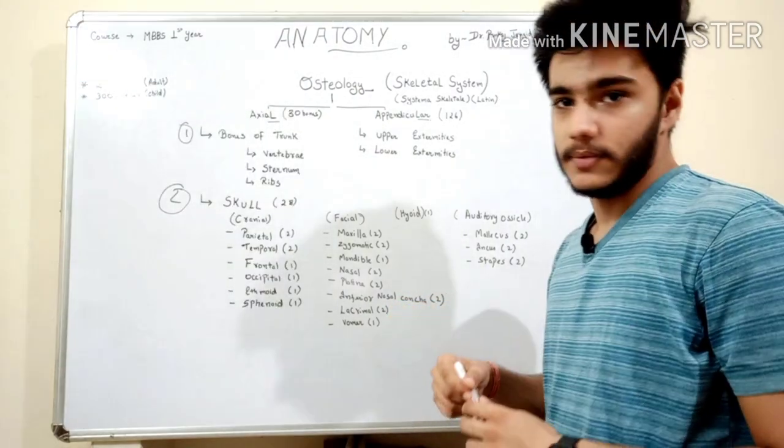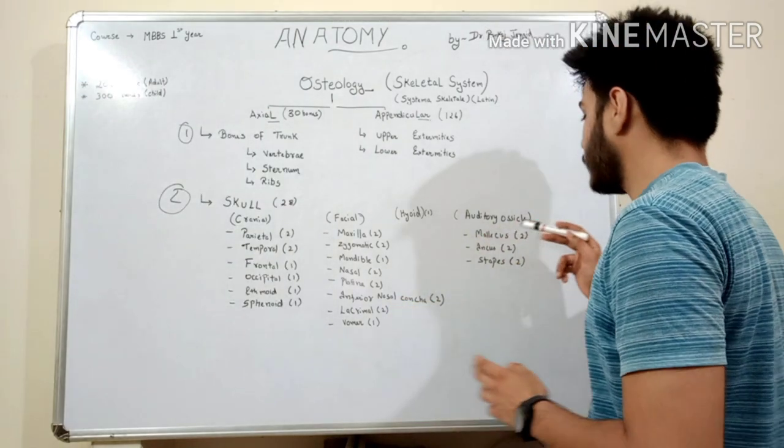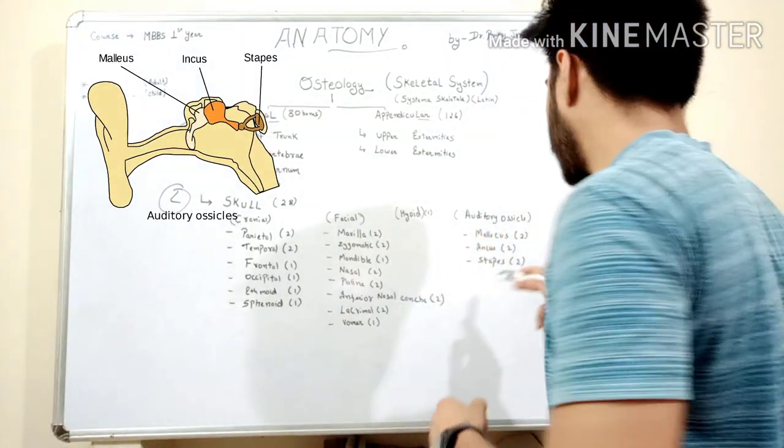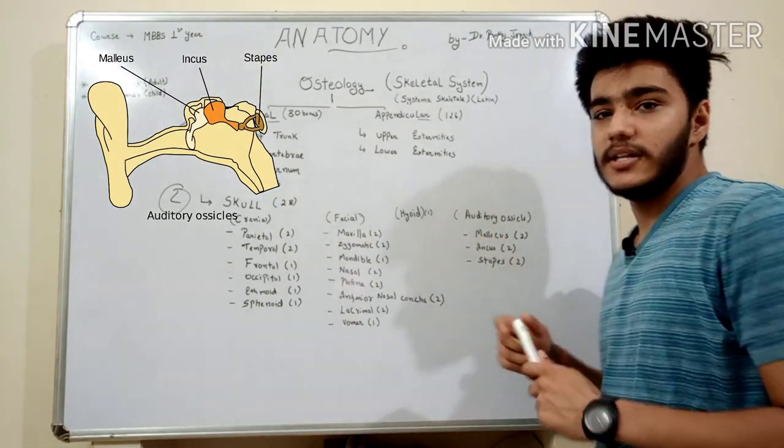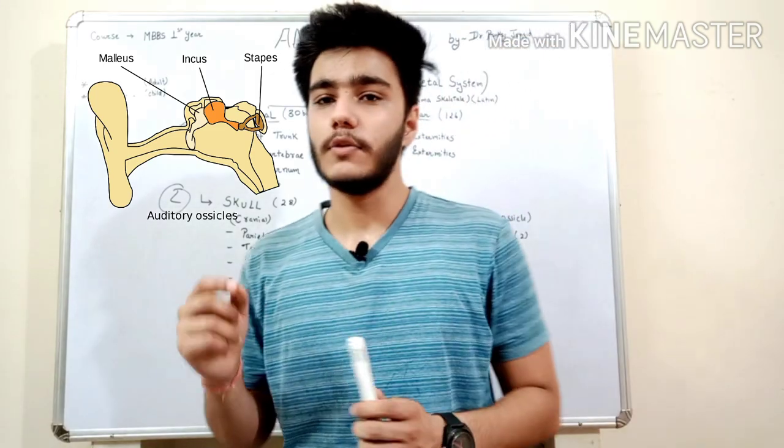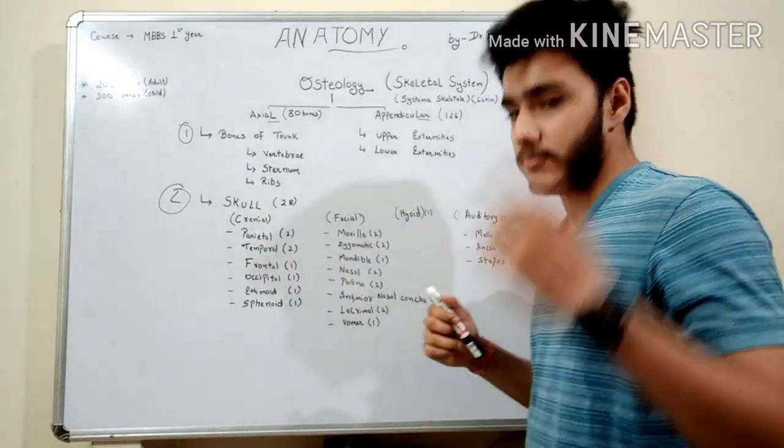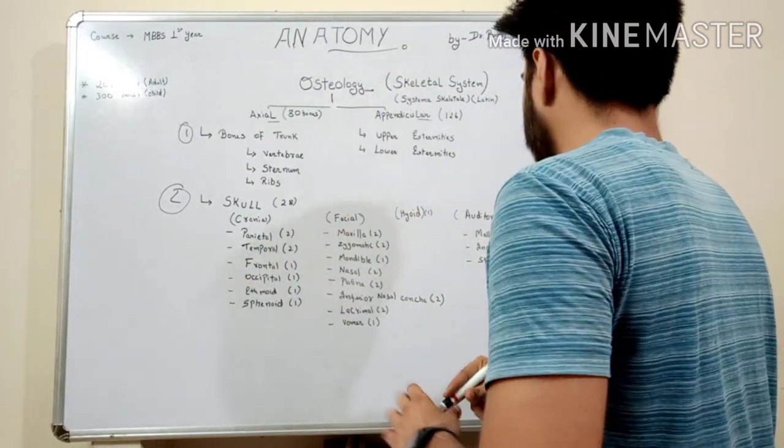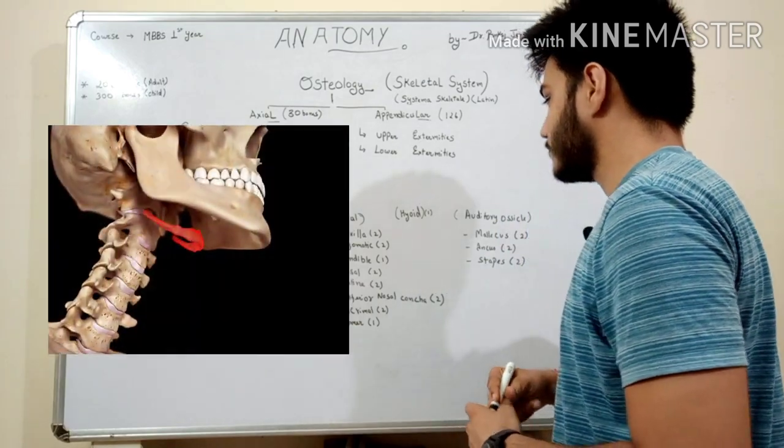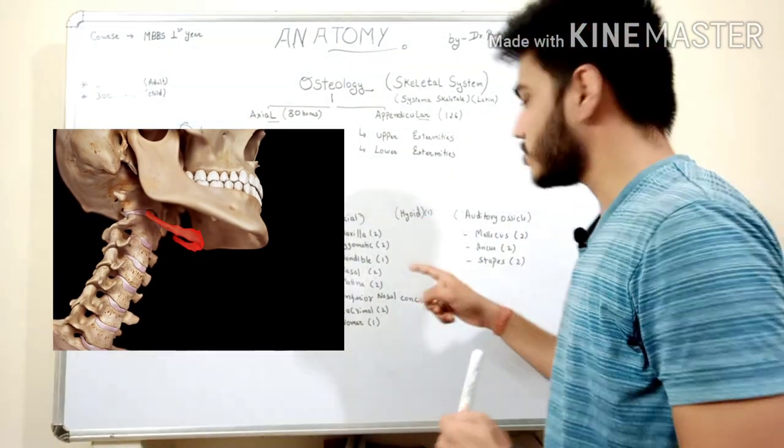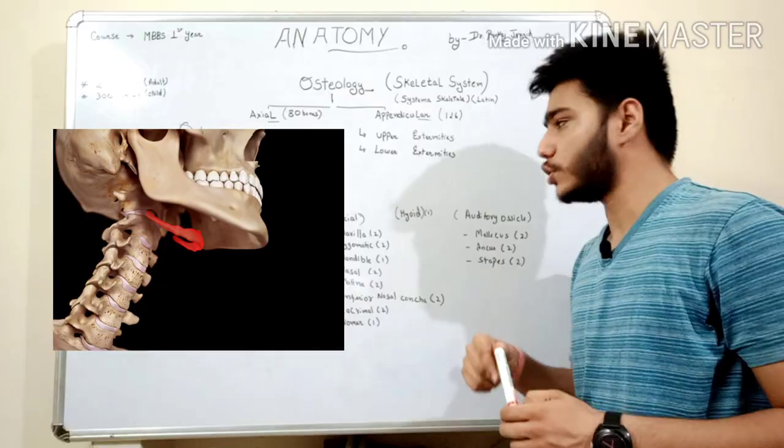Then we see auditory ossicles. In here there are malleus, incus, and stapes. These are the smallest bones in our body, in our skull. It contains another bone which is called hyoid bone, which is also a part of the skull.